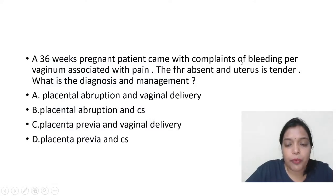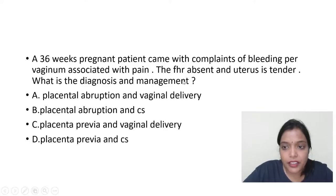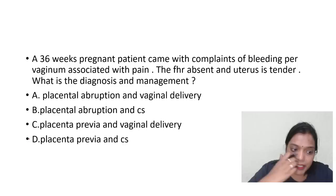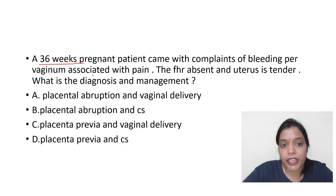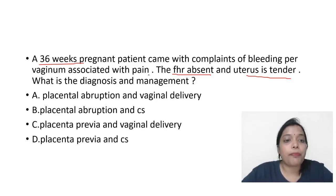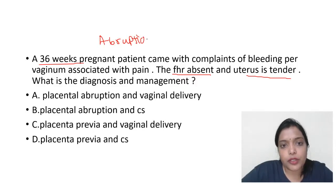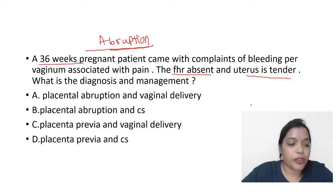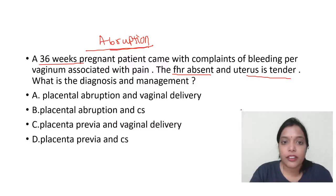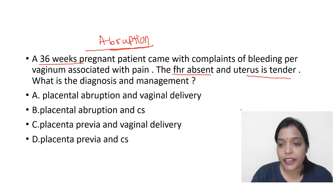A 36-weeks pregnant patient came with complaints of bleeding per vaginum associated with pain. The fetal heart rate was absent and uterus is tender. What is the diagnosis and management? Whenever you have painful bleeding and uterine tenderness, it's always abruption. Painful bleeding and tender uterus is always abruption.